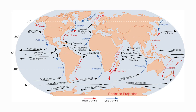The ocean has its own circulation as well, known as the global conveyor belt. The ocean's currents are interconnected, powered by winds, tides, Earth's rotation, the sun, and water density differences.